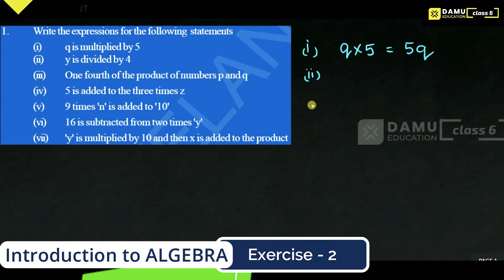The second statement is: y is divided by 4. That is y divided by 4, written as y/4.